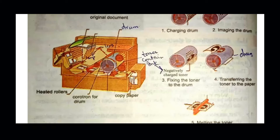The heated roller melts the toner into the paper, fixing the writing permanently onto the paper. This way the paper is fixed and we can see the original copy of the document.